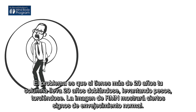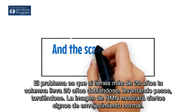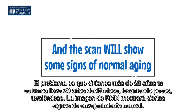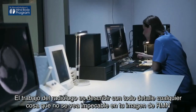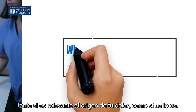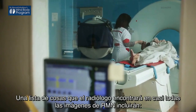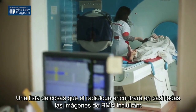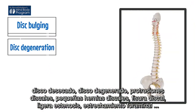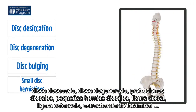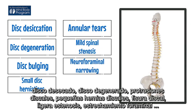Once you are older than 20, your spine has 20 years of bending, lifting, and twisting, and the scan will show some signs of normal aging. It is the radiologist's job to describe in great detail every single thing that is not pristine on your MRI scan, whether it is relevant to why you are having pain or not. A list of things that a radiologist will find on nearly every MRI scan includes disc desiccation, disc degeneration, disc bulging, small disc herniations, annular tears, mild spinal stenosis, and neuroforaminal narrowing.